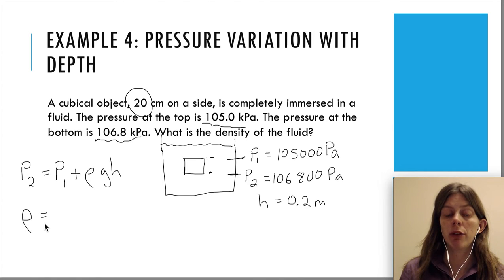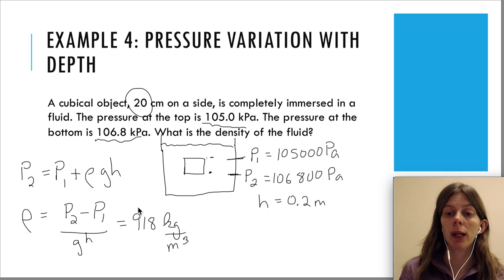Now we solve for our unknown variable rho. It's a rho, not a p for density. It's going to be P2 minus P1, subtract the P1, and then divide by g h. When we do this, we're going to get 918 kilograms per meters cubed. So the density of this liquid is slightly smaller than the density of water.